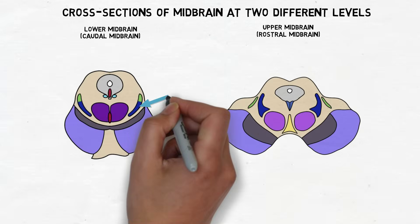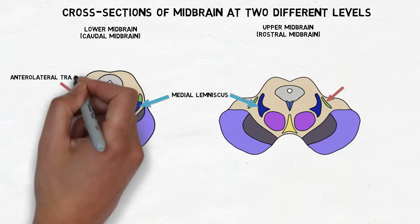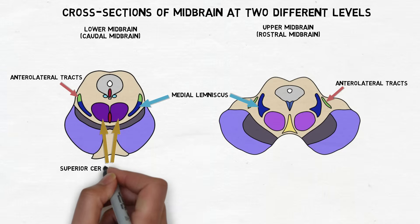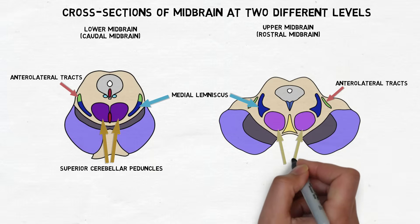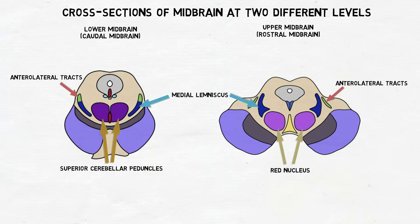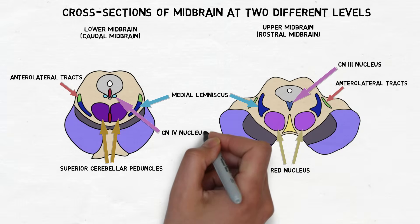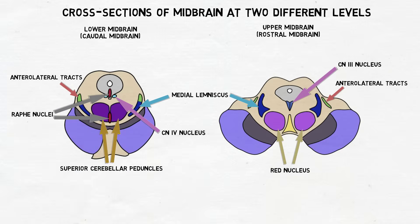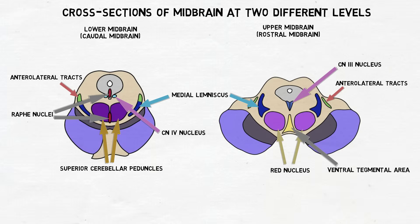The tegmentum contains a variety of ascending and descending tracts, like the medial lemniscus and anterolateral tracts. It also contains fibers from the superior cerebellar peduncles, the main output pathway of the cerebellum, and the red nucleus, a nucleus thought to play a role in motor coordination. The tegmentum also contains nuclei for cranial nerves three and four, as well as neurons that are part of the raphe nuclei — the major serotonin-producing neurons in the brain — and the ventral tegmental area, one of the largest collections of dopamine-producing neurons in the brain.